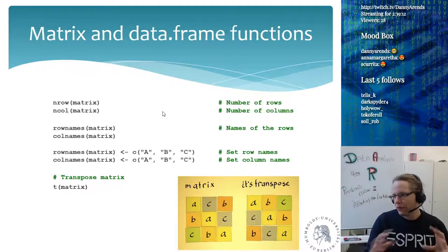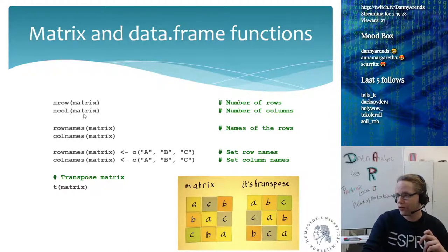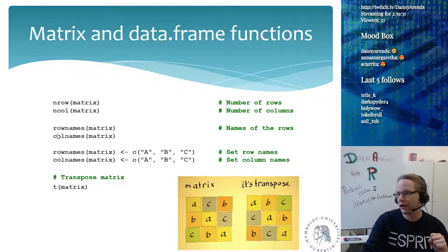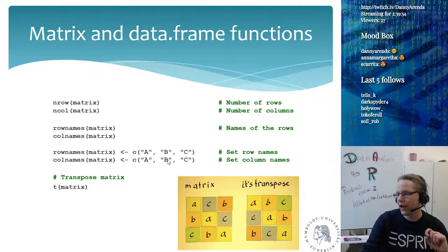Matrices and data frames don't have a length — they have nrow and ncol. The nrow function tells you how many rows a matrix has; ncol tells you how many columns. You can get and set the row names and column names using rownames() and colnames(). For example, if you have a 3x3 matrix, you can set rownames to be a, b, c and do the same for column names.